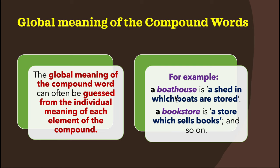However, there are compound words whose global meanings must be learned as if they were single words, because such meanings cannot be guessed from the individual component elements. For example, a redcoat is a British soldier, not a red-colored coat. Similarly, a flatfoot is a detective or policeman, a turncoat is a traitor, and a hot dog is a kind of fast food.